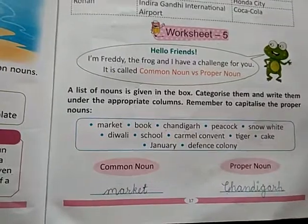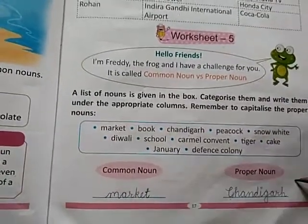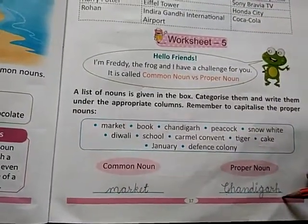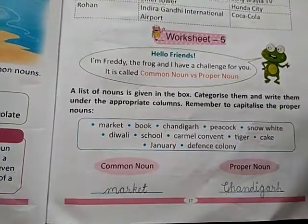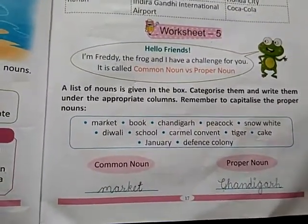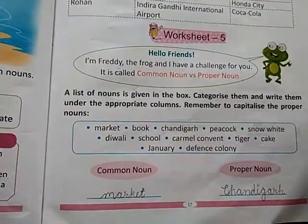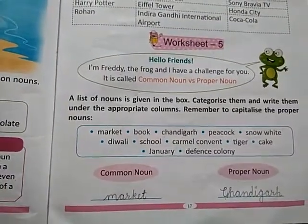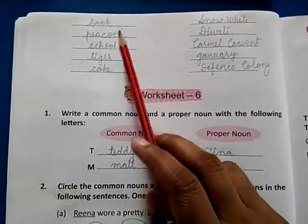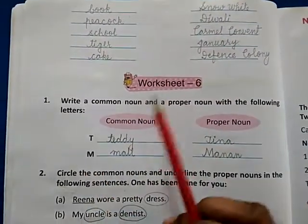June classes hamaari chal rahi hai — May ne us mein fill karni thi yeh book. And you will see it and fill it. First you will try to do it yourself. If you have any difficulty, then you can check the answer from the video. Turn the page and see — vahaan jo words hai, sare words ko hum ne categorize kar liya hai.